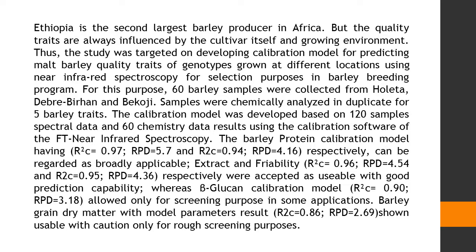The barley protein calibration model, having R-squared C equals 0.97, RPD equals 5.7, and R-squared CV equals 0.94, RPD equals 4.16 respectively, can be regarded as broadly applicable. Extract and friability, with R-squared C equals 0.96, RPD equals 4.54, and R-squared CV equals 0.95, RPD equals 4.36 respectively, were accepted as usable with good prediction capability.